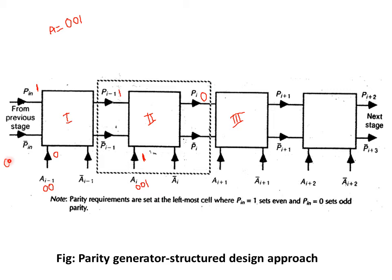Here we have the inputs ai minus 1, ai, then ai plus 1. At the output parity side, we have pi, pi minus 1. Likewise, we are going to calculate the parity bitwise. Let us consider one example: consider the input is now 0, 0, 1.